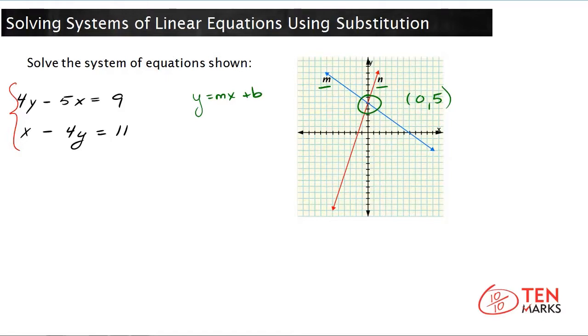So the first step is to find a variable that has a coefficient of either one or negative one. And you'll see why this is useful. But I notice here that the x in the second equation has a coefficient of one. When you don't see a coefficient in front of the variable, you assume that it's one.